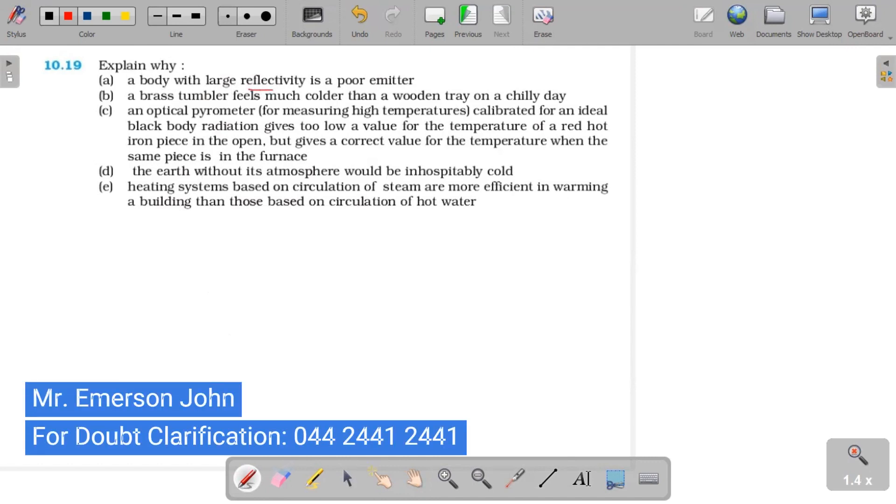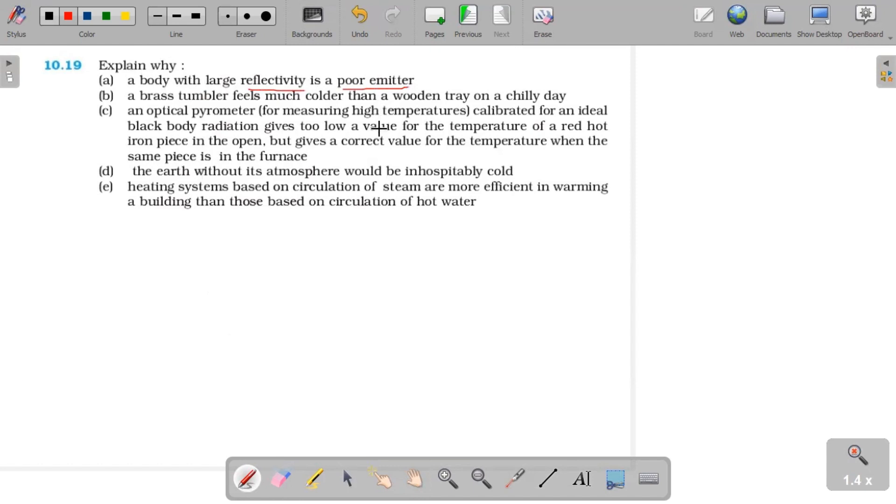Explain why a body with large reflectivity is a poor emitter. First part, there is a term: a for absorptivity, r for reflectivity, and t for transmittance should be equal to 1. What is absorptivity, reflectivity, transmittivity? It is same substance.